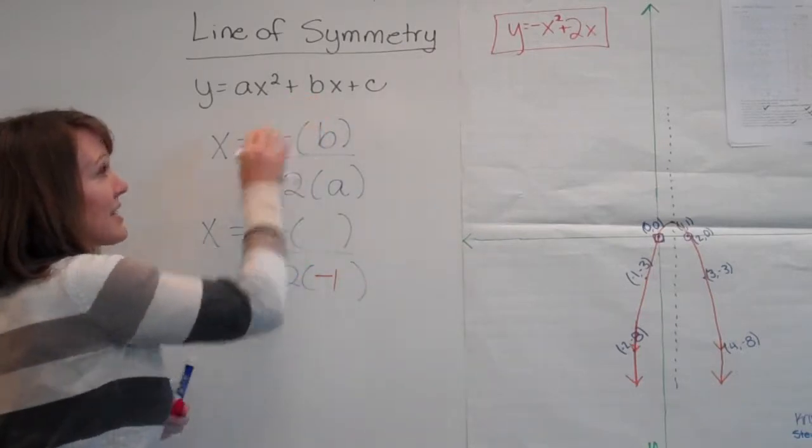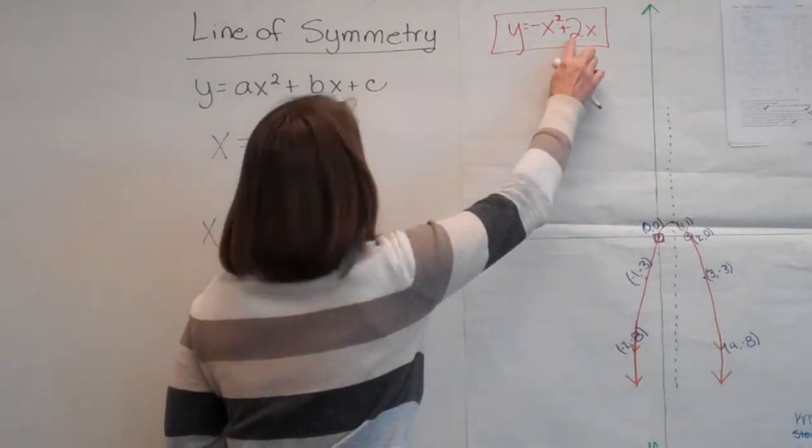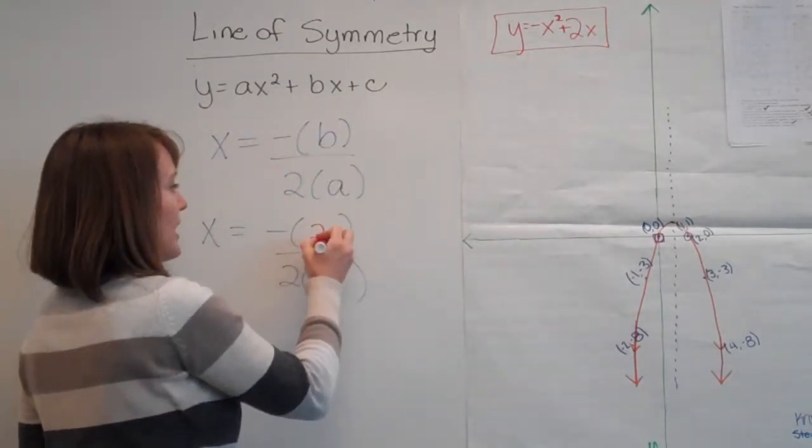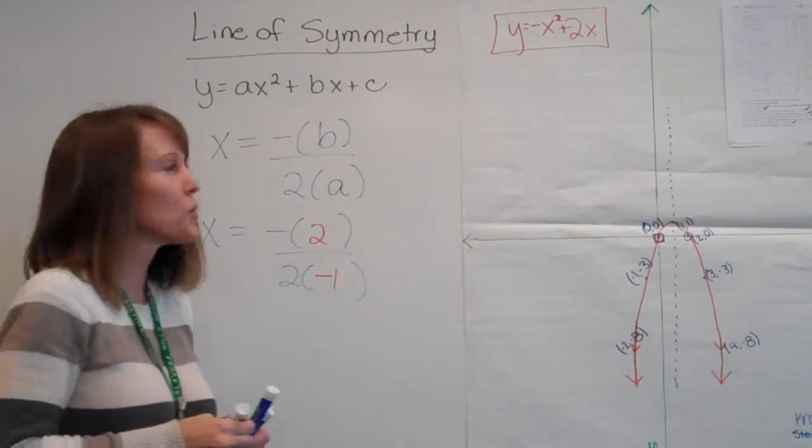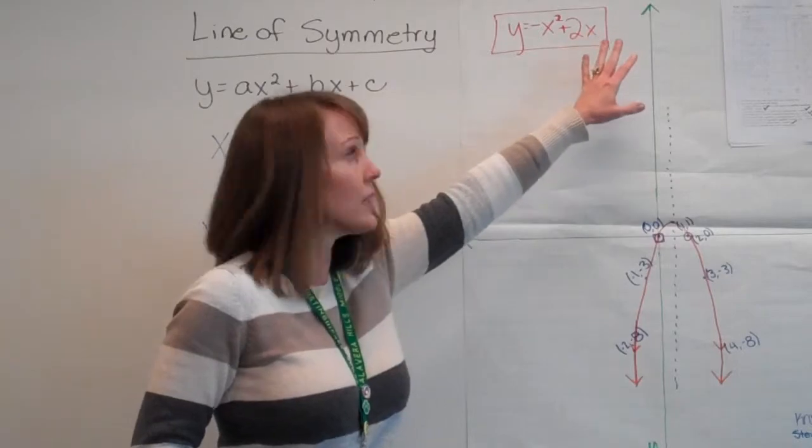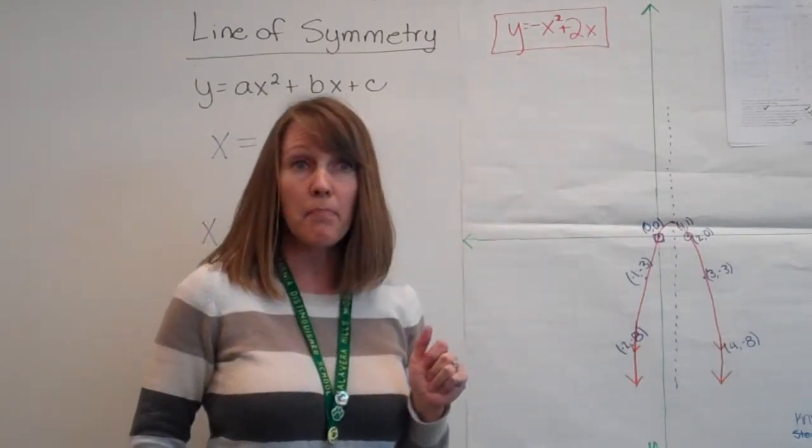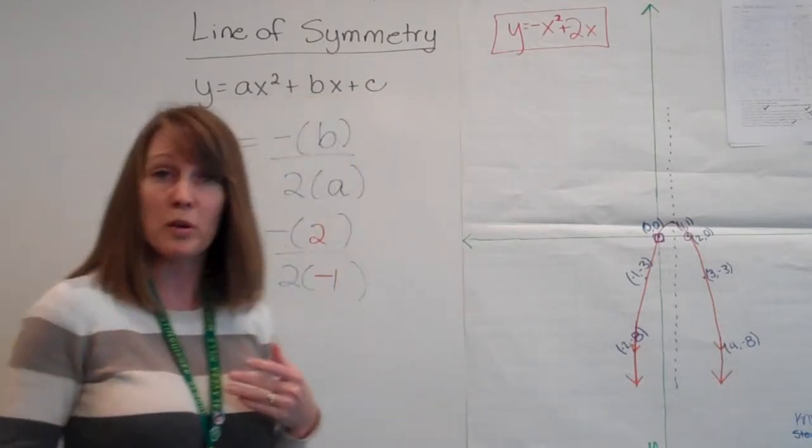Alright, then our b is the number in front of the x term, and so that would give us our 2 right here, so that's what we're going to put right here. And you might say, well Mrs. Woolley, but you have a plus c here, there's no other number here. We don't need that for this equation, but if there's no other number, then that would be a plus 0, right? So our c term would be 0.